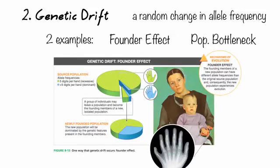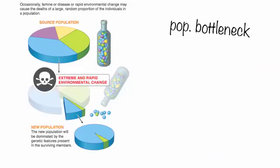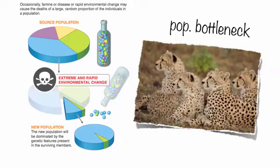The founder effect is basically when a small group — a small sample — moves to a new location, but that sample includes a large amount of unusual traits, making the new population have more of those traits. Our human example is the Amish, who have lots of six-fingered people because the original founders had six fingers and passed that on. Population bottleneck is like with cheetahs — something crazy happens and only a small number of alleles survive, so the new population that regrows is very genetically similar.